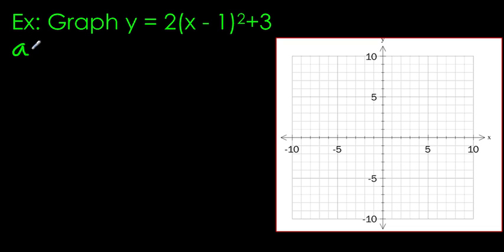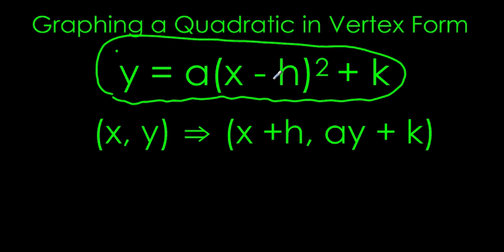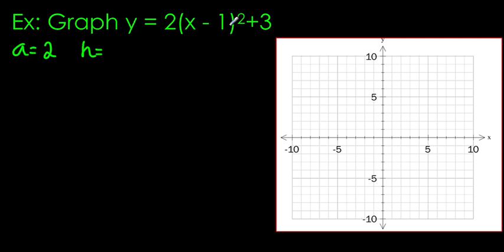We have a equals 2 and we have h equals... one important thing to remember is that if you look in this formula, it says x minus h. So that means that my h value in this case is 1 because we already have the minus there. The way some of my students remember is if they think of this as negative 1, then they'll just take the opposite of that value. That makes my k value plus 3.